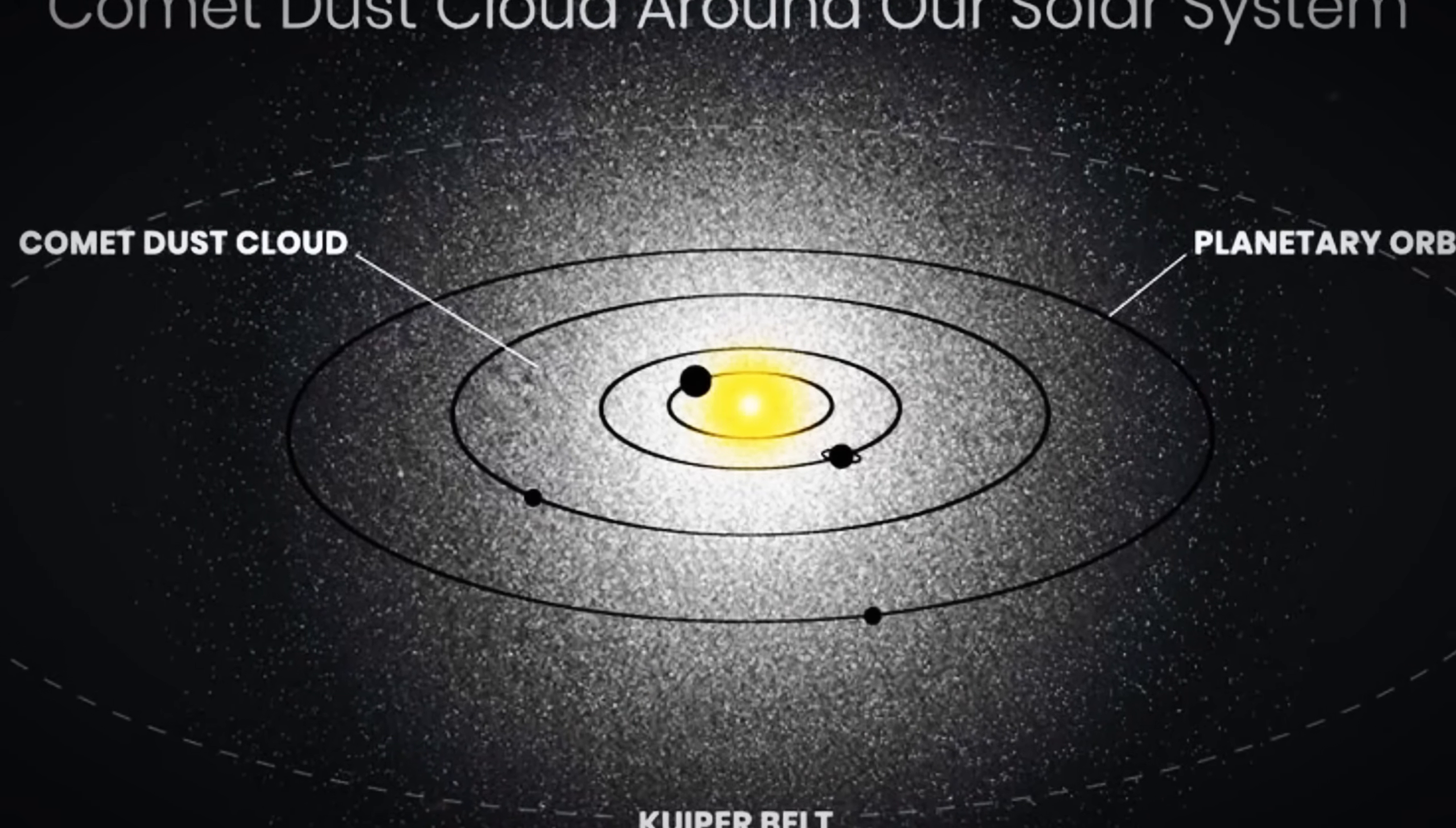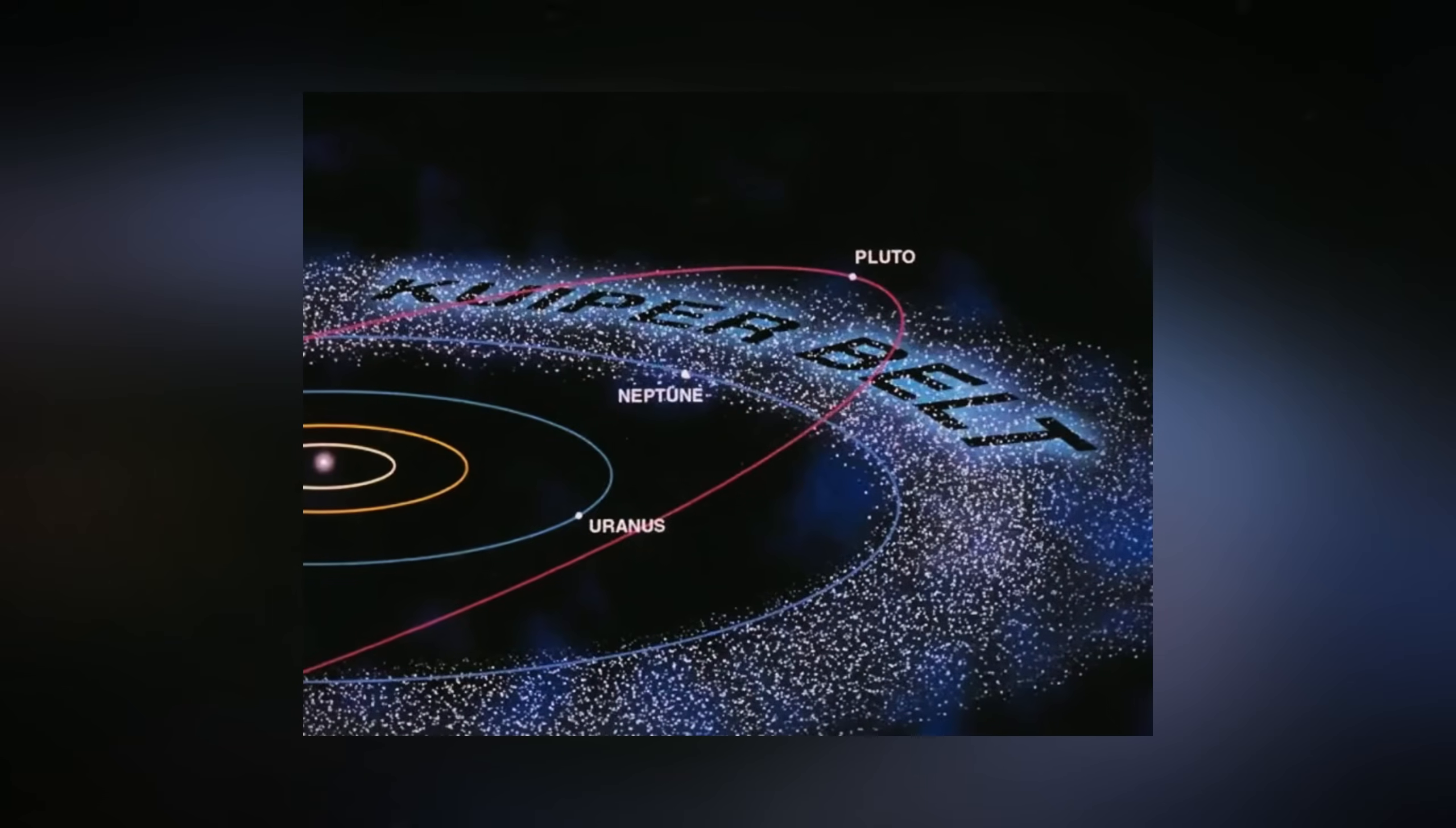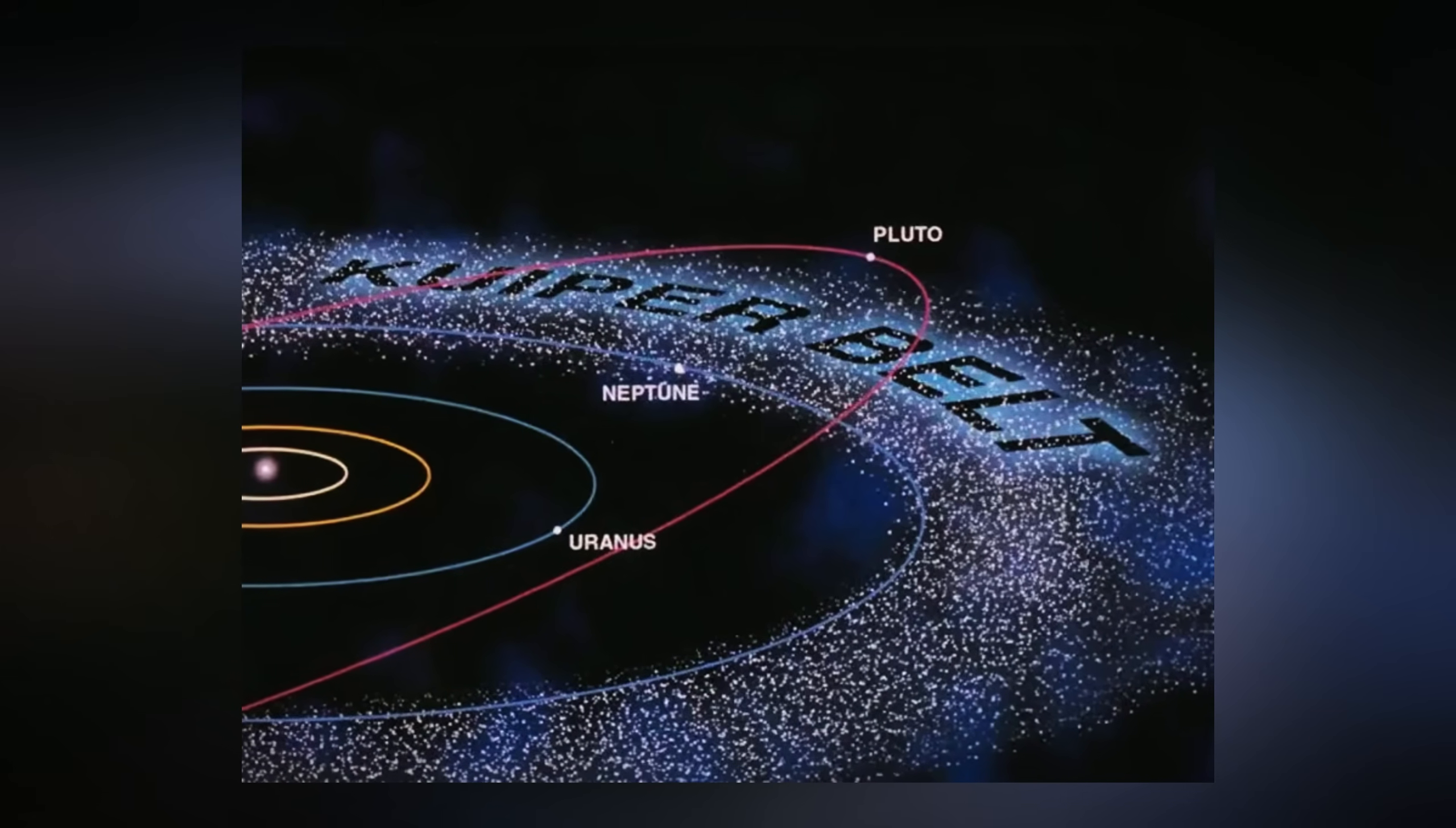Its late discovery doesn't diminish its importance in the solar system. The belt is home to a variety of celestial bodies, including dwarf planets like Pluto, Haumea, Makemake, and Eris.